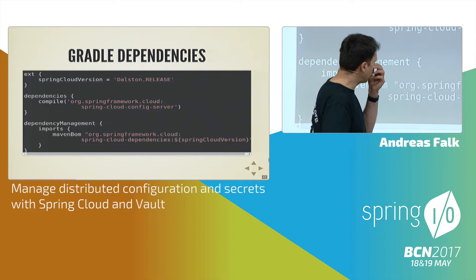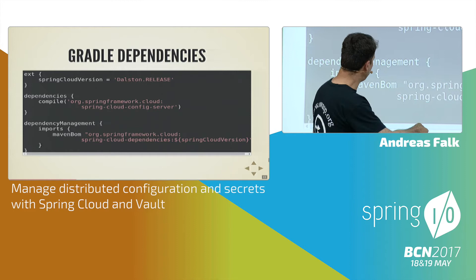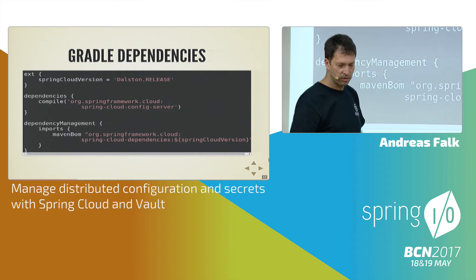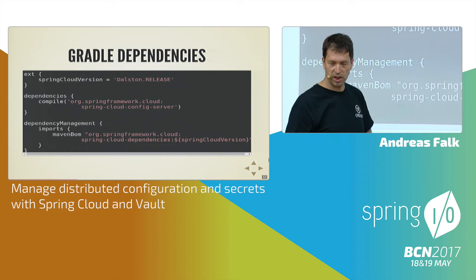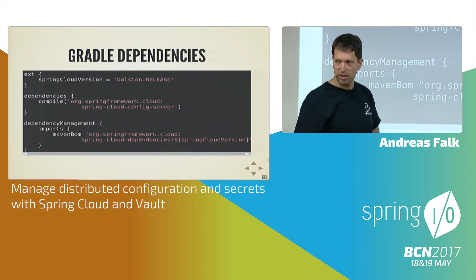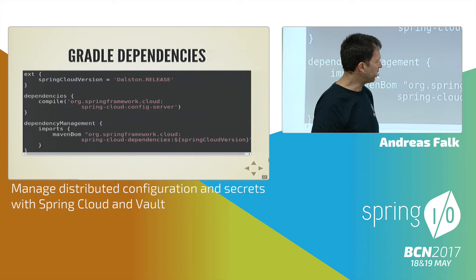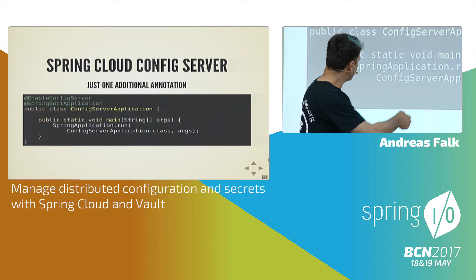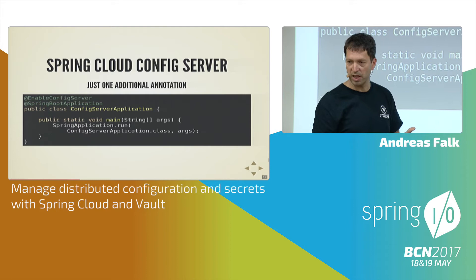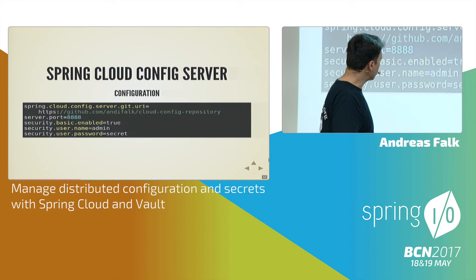It's quite easy to start a Spring Cloud Config Server. You just need the Spring Cloud Config Server starter as a dependency. If you generate it via start.spring.io you get the configuration with the reference to the Spring Cloud release train — I use the newest one, the Dalston release. All the stuff I present today is included in that latest Dalston release. The second easy step is just to add an annotation to mark your Spring Boot application as a config server.